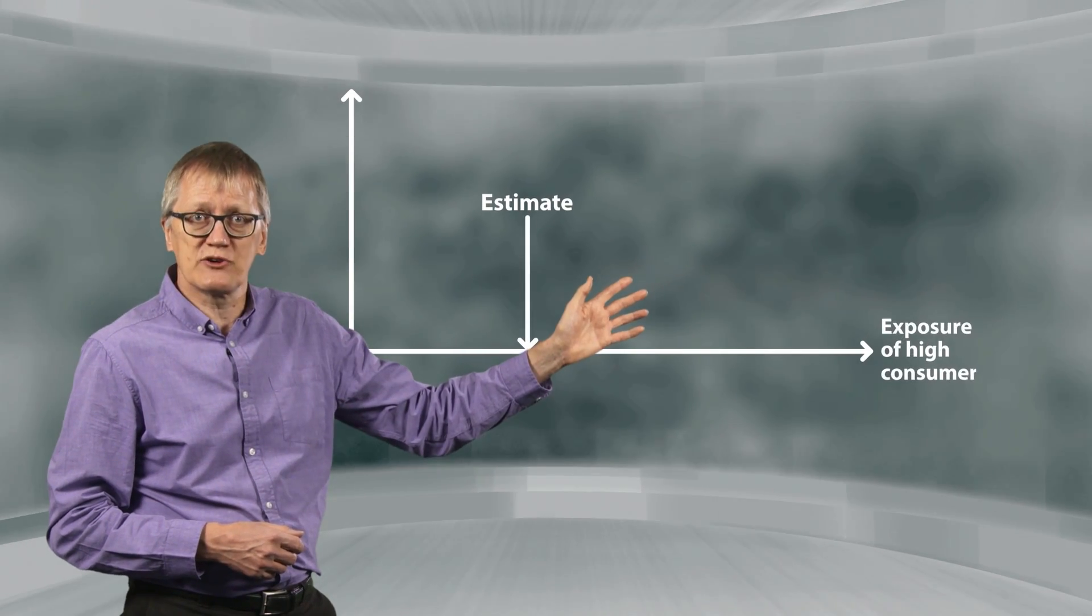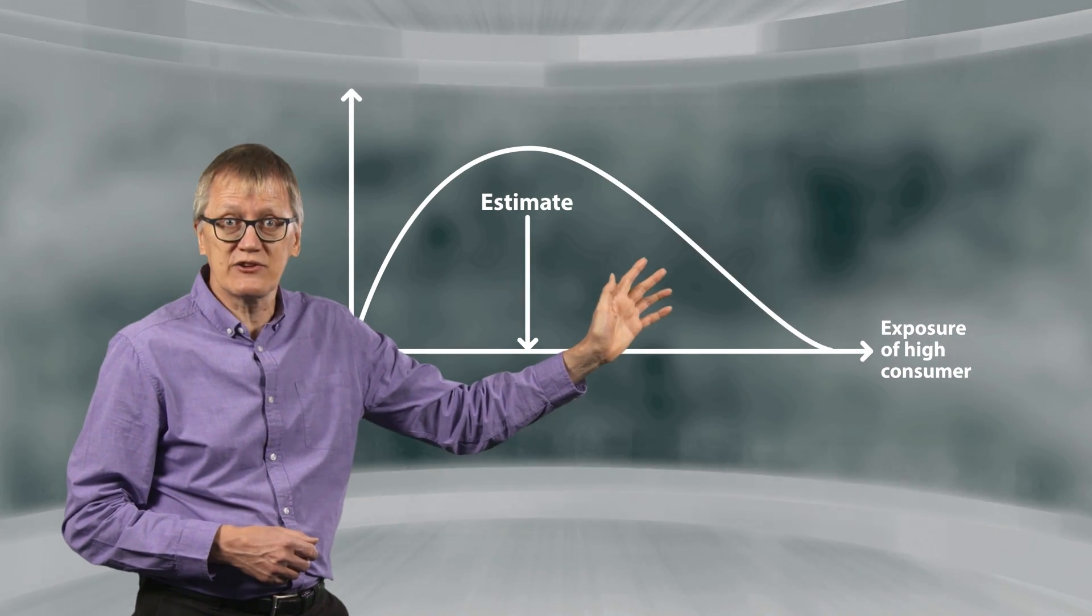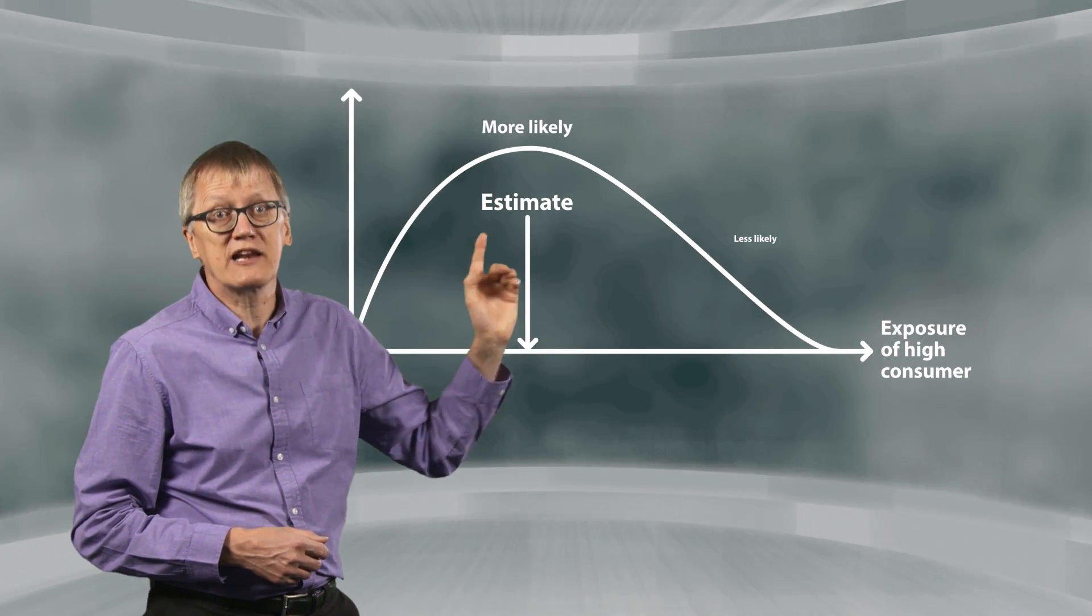Also, we won't know precisely how toxic the chemical is, which affects where we set the safe level for it. So, as for the journey time with a car, our estimate of the exposure will be uncertain. There's a range of possible values and some are more likely than others.